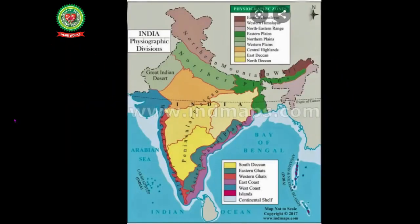Name the natural regions of India. The 5 natural regions of India are the Northern Mountains, the Northern Plains, the Great Indian Desert, the Southern Plateau, and the Coastal Plains.